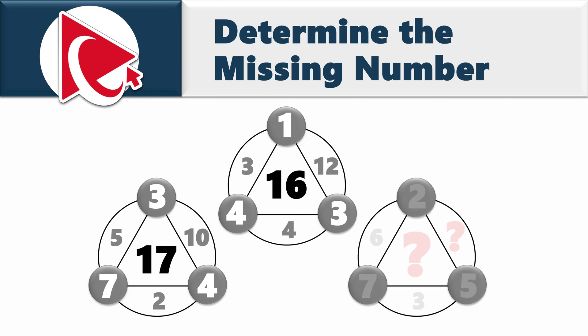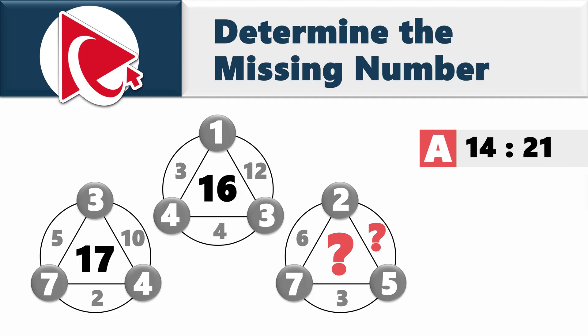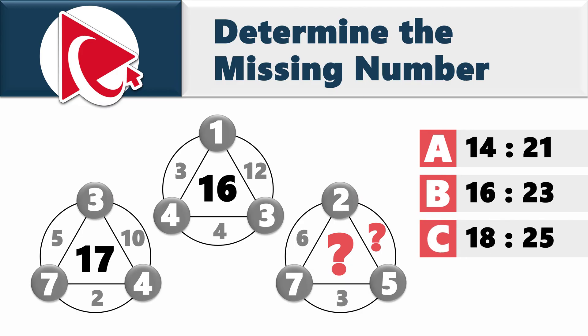The third circle looks a little bit more challenging because two numbers are missing. The numbers in the small circle are 5, 7, and 2, and there are two numbers inside the large circle: 6 and 3. You need to calculate and select the two missing numbers out of four possible choices: Choice A, 14 and 21; Choice B, 16 and 23; Choice C, 18 and 25; and Choice D, 20 and 27.